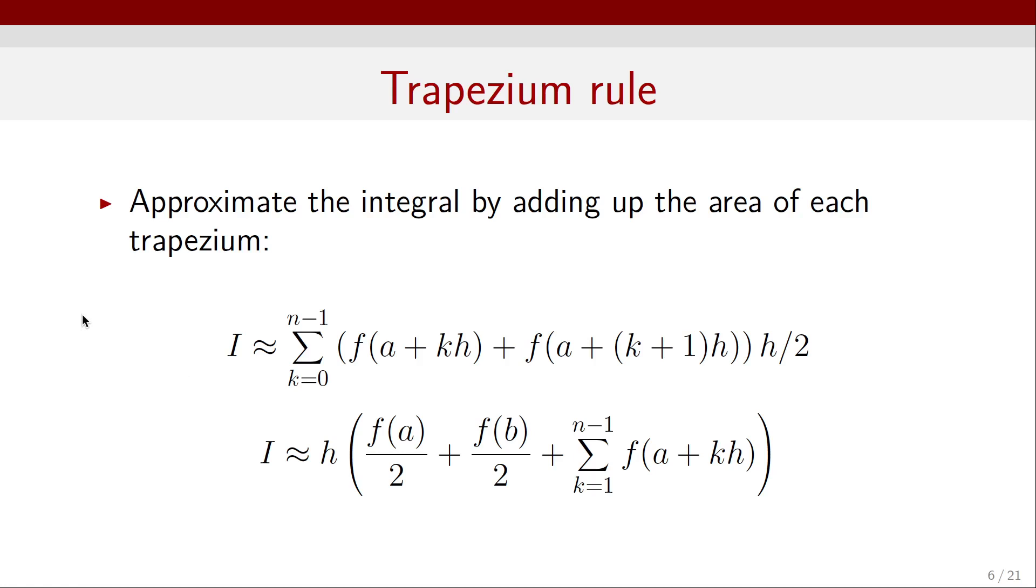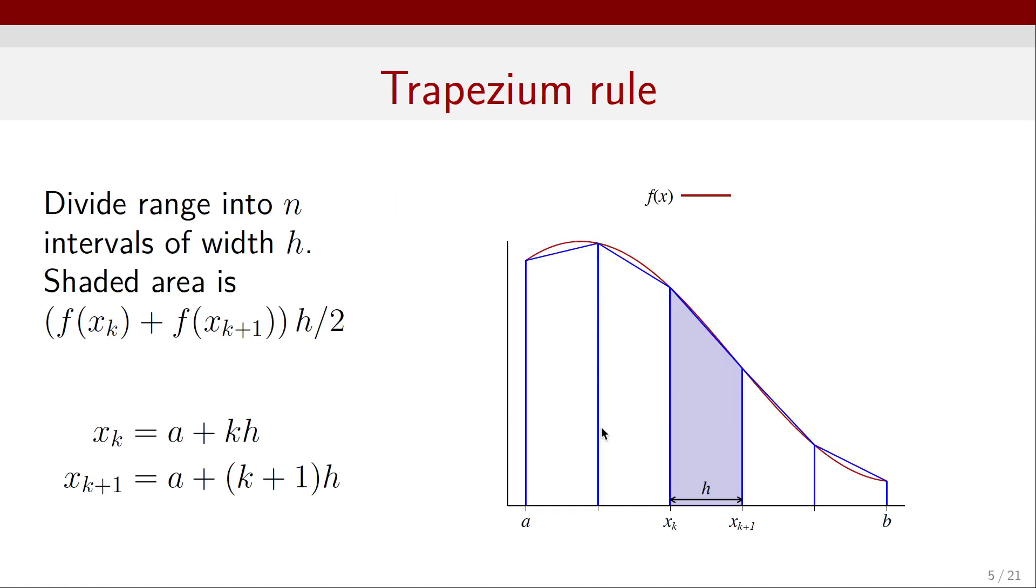We approximate the integral by adding up the area of each trapezium, summing over k from 0 to n minus 1. If you look at this, you see that each intermediate term will contribute twice - once for this interval and once for the next interval. So all of these intermediate points f of x_k will contribute twice, except the first one and the last one, which will only contribute once.